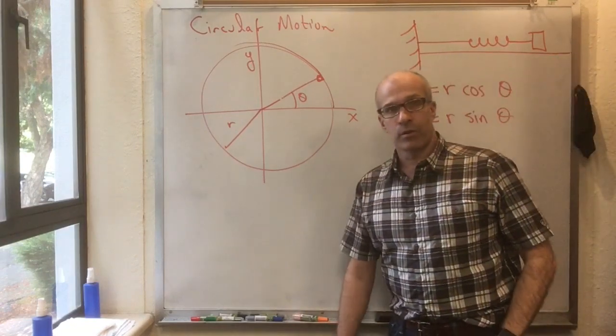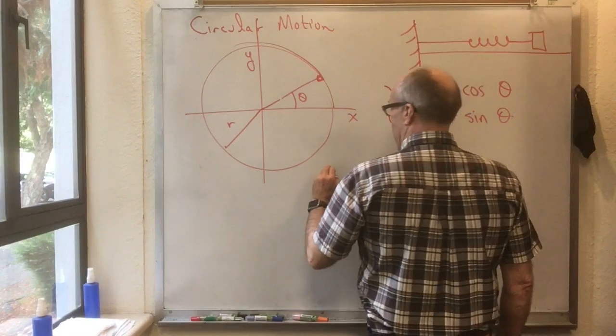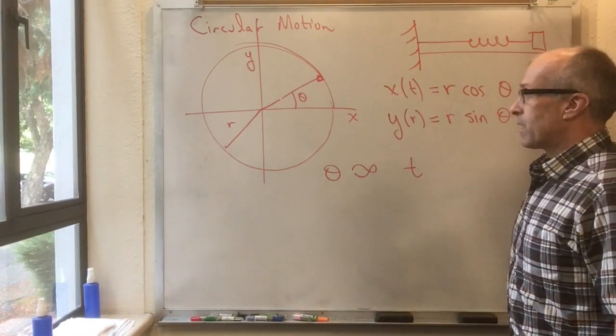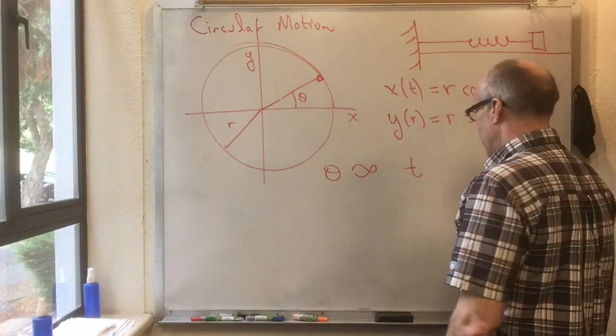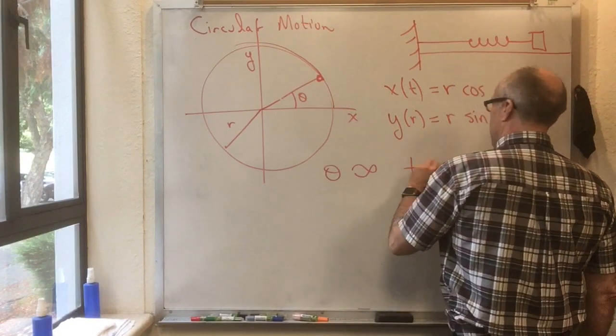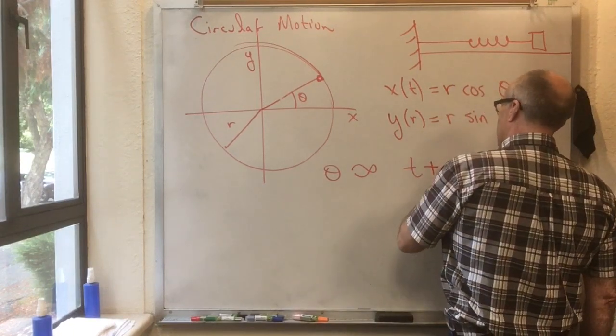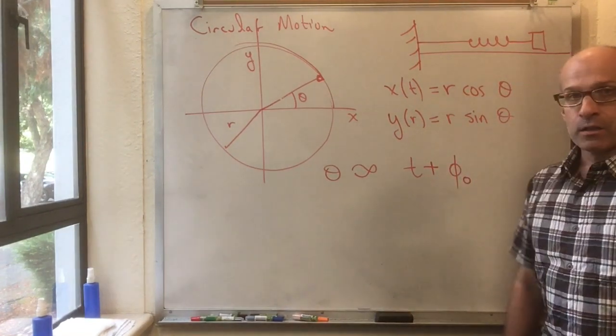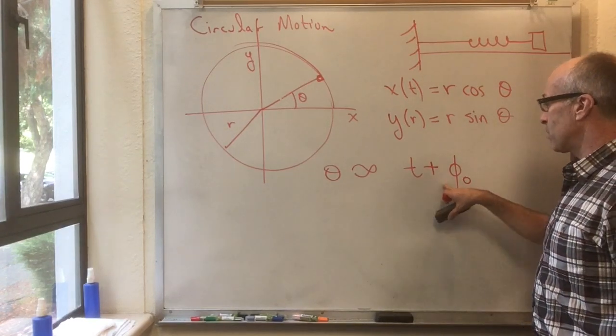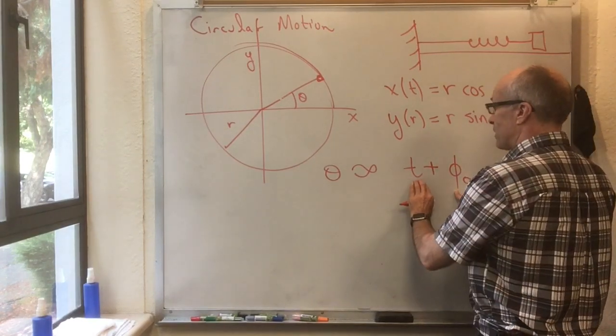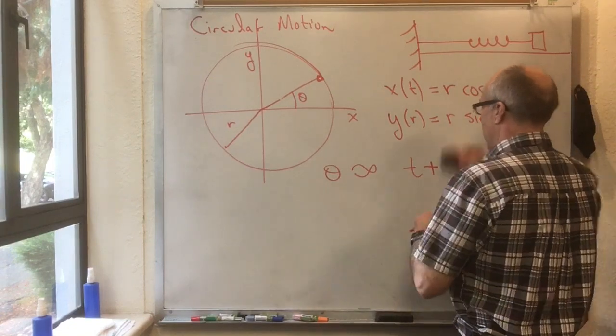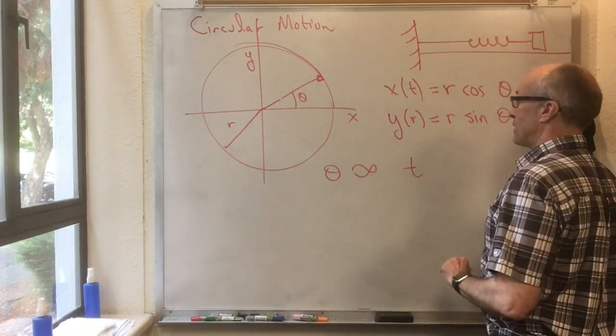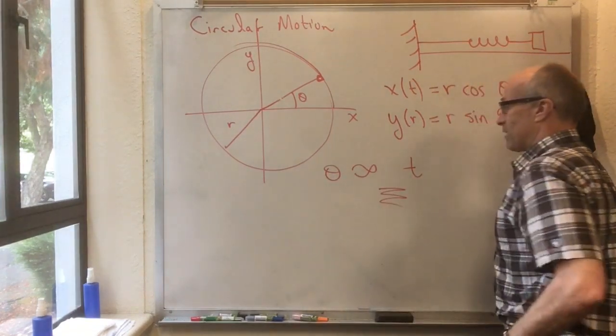Now a really important special case is if theta is proportional to t. That's uniform circular motion. Theta could be proportional to t, and then there could be some offset term, which when you put t equal to zero, you get phi naught. But just leave that off for a second. Theta is just going to be proportional to t. Let's figure out what the proportionality constant is.